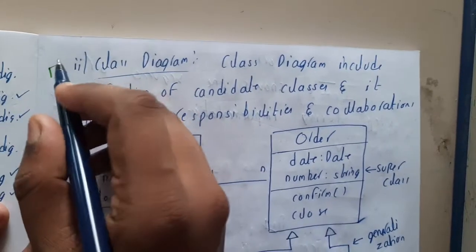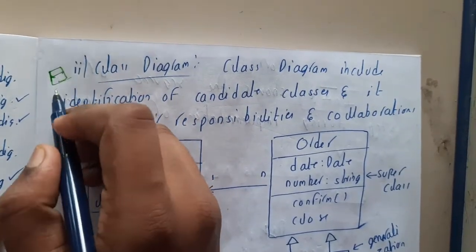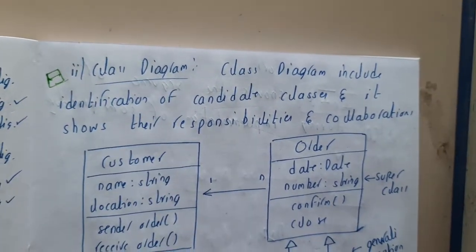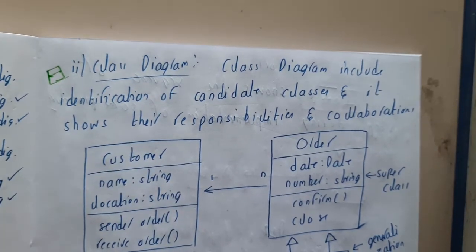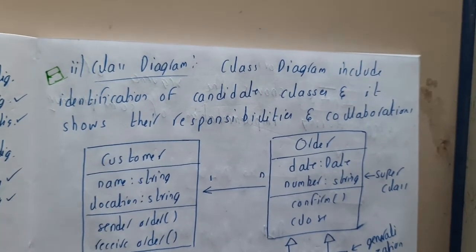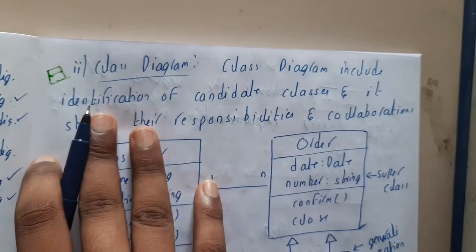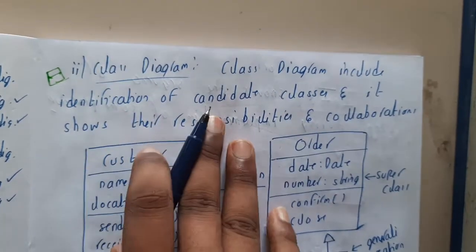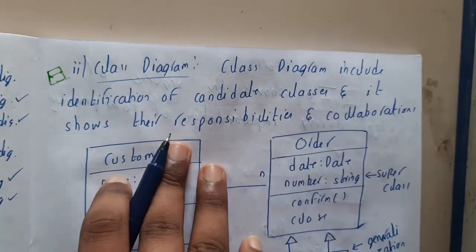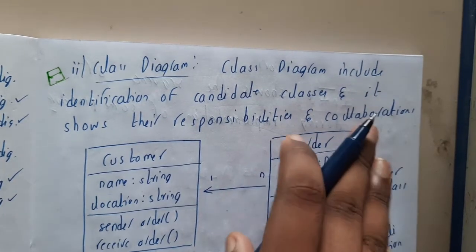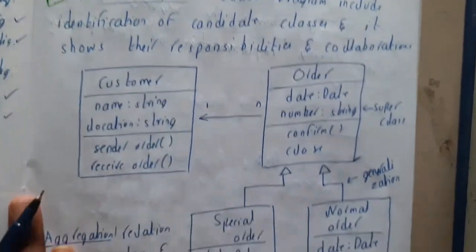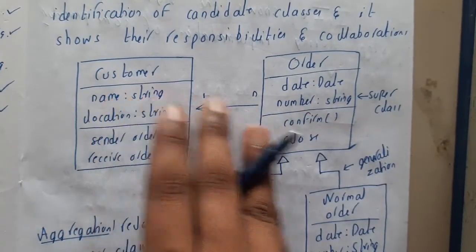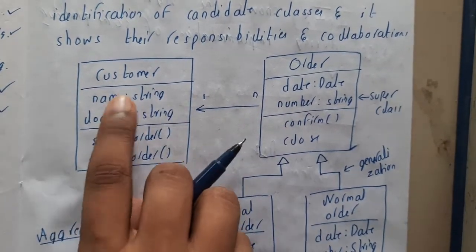Class diagrams — a class is a collection of methods, variables, and functions. Class diagrams include the identification of candidate classes and show their responsibilities and collaboration. They also represent the relationships between those classes.